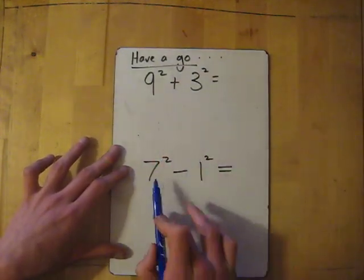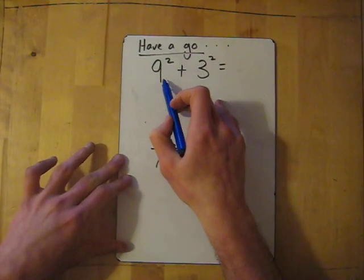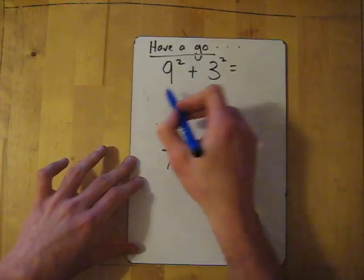Okay, so I'll let you have a go. I'll go through the answers in three seconds: 3, 2, 1. So 9 squared is 9 times 9 which is 81.